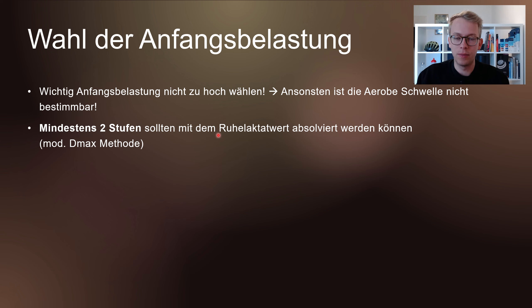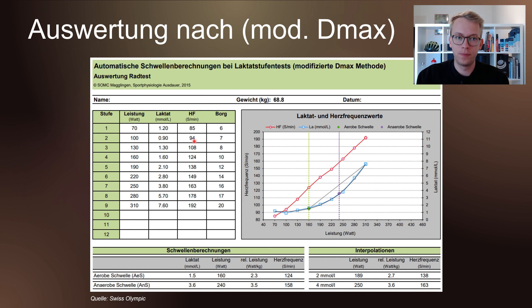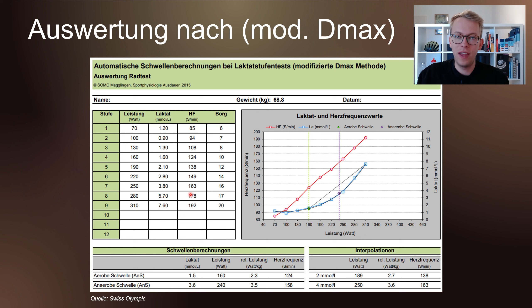Die korrekte Wahl der Anfangsbelastung ist ein wichtiger Parameter, denn die Anfangsbelastung darf nicht zu hoch gewählt werden. Ansonsten ist die Bestimmung der Aeroben Schwelle nicht möglich. Man muss darauf achten, beim Aufwärmen nicht zu intensiv aufzuwärmen, damit man nicht schon vor dem Test einen zu hohen Laktatwert erhält. Gerade bei der modifizierten DMAX-Methode ist es essentiell wichtig, dass mindestens die ersten zwei Stufen mit dem Ruhe-Laktatwert absolviert werden können.